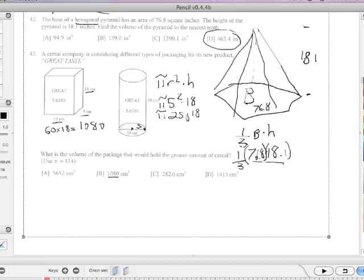This is 450 times pi, and so this is 3 times 3.14 times 450, which is going to be something like this one here. It's going to be 1413 cubic centimeters.